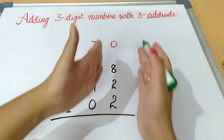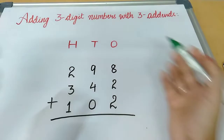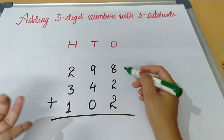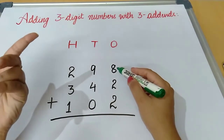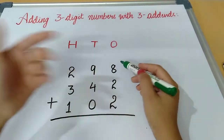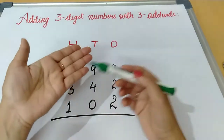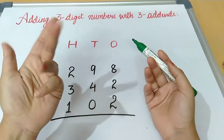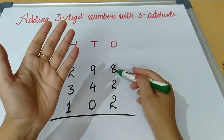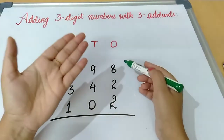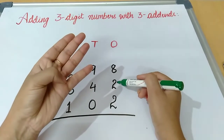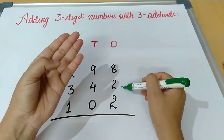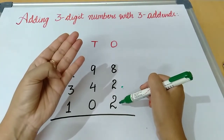We will begin from the ones column and we will take carry wherever necessary. As I said earlier, we will keep one number — this digit — in mind, and we will count on our fingers or on lines. Eight is bigger, so we will keep eight in mind and after eight we will count: nine, ten. So that gives us ten.